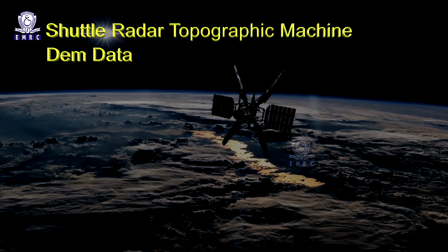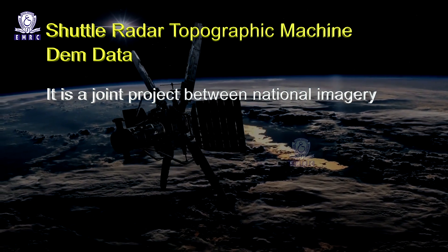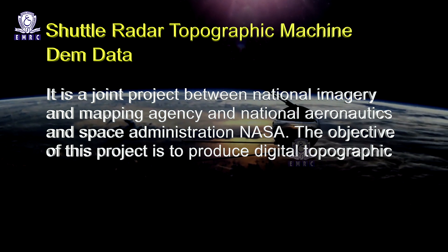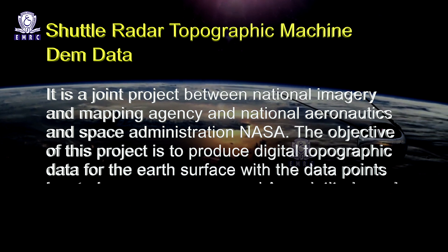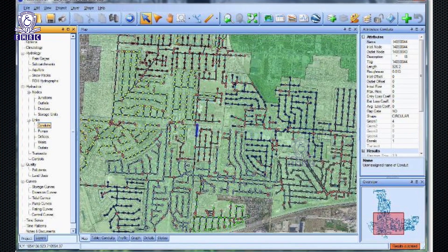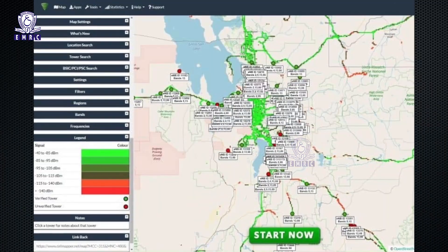Shuttle Radar Topography Mission (SRTM) DEM data is a joint product between the National Imagery and Mapping Agency and NASA. The objective is to produce digital topographic data for the Earth's surface with data points located at every one arc second on a latitude and longitude grid. The absolute vertical accuracy of the elevation data is 16 meters. Applications include drainage modeling, flight simulators, cell phone tower site suitability, navigation safety, mapping, flood control, soil conservation, and reforestation.